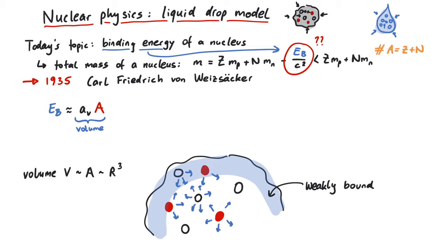which in turn is proportional to the third power of the radius. The surface of a sphere is proportional to R squared. Therefore, this second term should be proportional to A to the power of two thirds. Notice the minus sign in front of this so-called surface term.